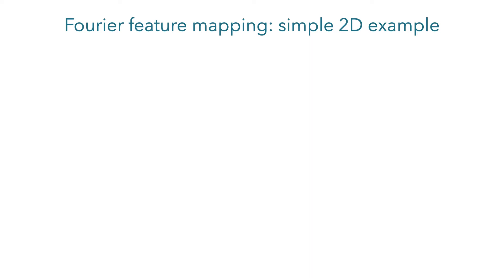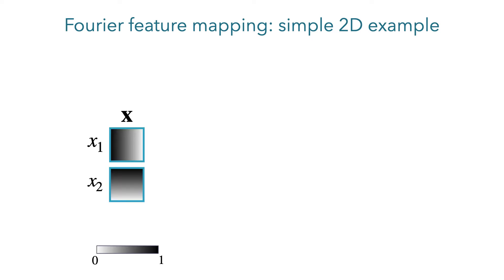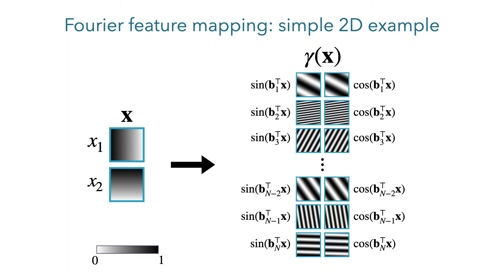To give some intuition, here's a basic example in 2D. We sample each row of the random B matrix from a Gaussian distribution. We'll start by plotting the input coordinates for a regular grid sampling of 2D points, so increasing x1 from 0 to 1 results in a ramp from left to right, and similarly increasing x2 results in a ramp from top to bottom. After passing these coordinates through the Fourier feature mapping, we get sine waves at different frequencies that are tilted due to the linear combination of the x1 and x2 dimensions.